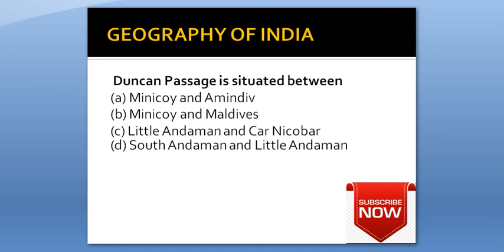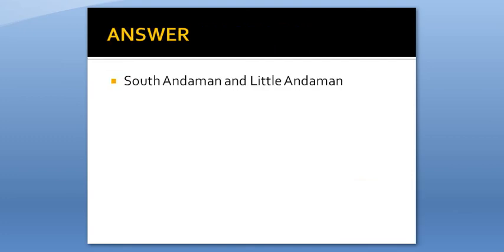Duncan Passage is situated between: Option A: Minikoy and Amindivi. Option B: Minikoy and Maldives. Option C: Little Andaman and Nicobar. Option D: South Andaman and Little Andaman. Answer is South Andaman and Little Andaman.